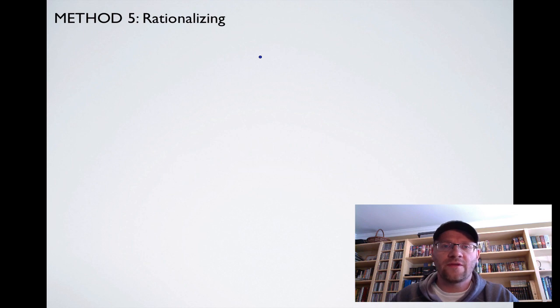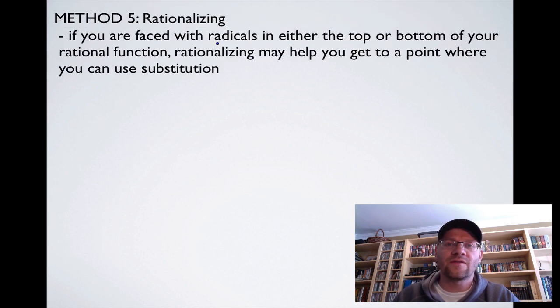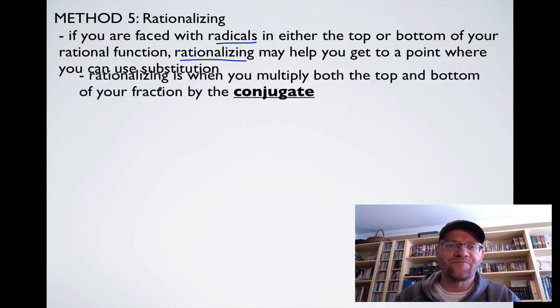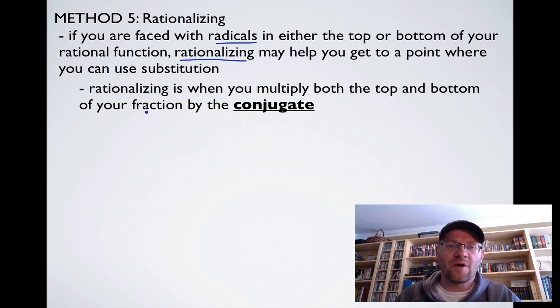Our fifth and final method is called rationalizing. If you're faced with radicals in either the top or the bottom of your rational function, rationalizing may help you get to a point where you can use substitution. Rationalizing is when you multiply both the top and the bottom of your fraction by the conjugate of either the top or the bottom. And the conjugate is the same terms but opposite signs in between. So as you can see here, the limit as x approaches 6 of root(3 plus r) minus 3 divided by (r minus 6). If I were to try to substitute in right away, on the bottom I'm going to get 0. So I'm going to multiply by the conjugate.